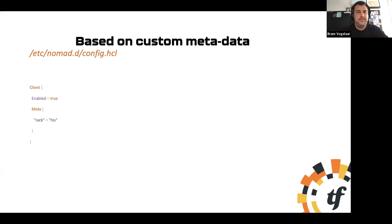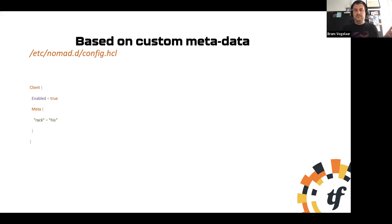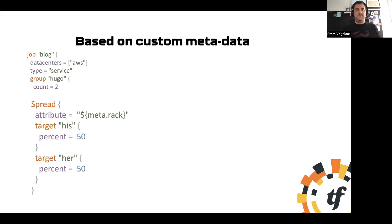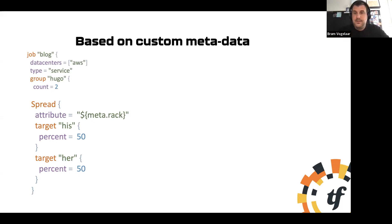Spread is based on metadata so you can set custom metadata. In my home lab I pretend to have two data centers — 'his side' and 'her side' — because that's how our home office is set up. Two of my nodes are running on my side, two on her side. I can not only spread them across the two but also give a certain weight or priority. In this case I give his side and her side each 50% priority so they're equally spread.